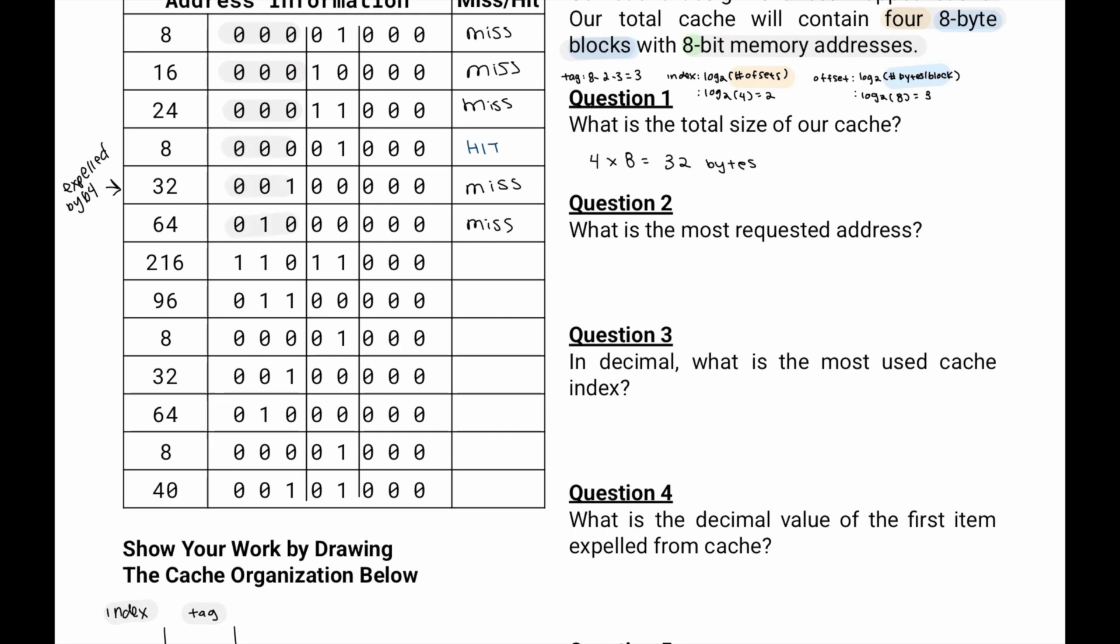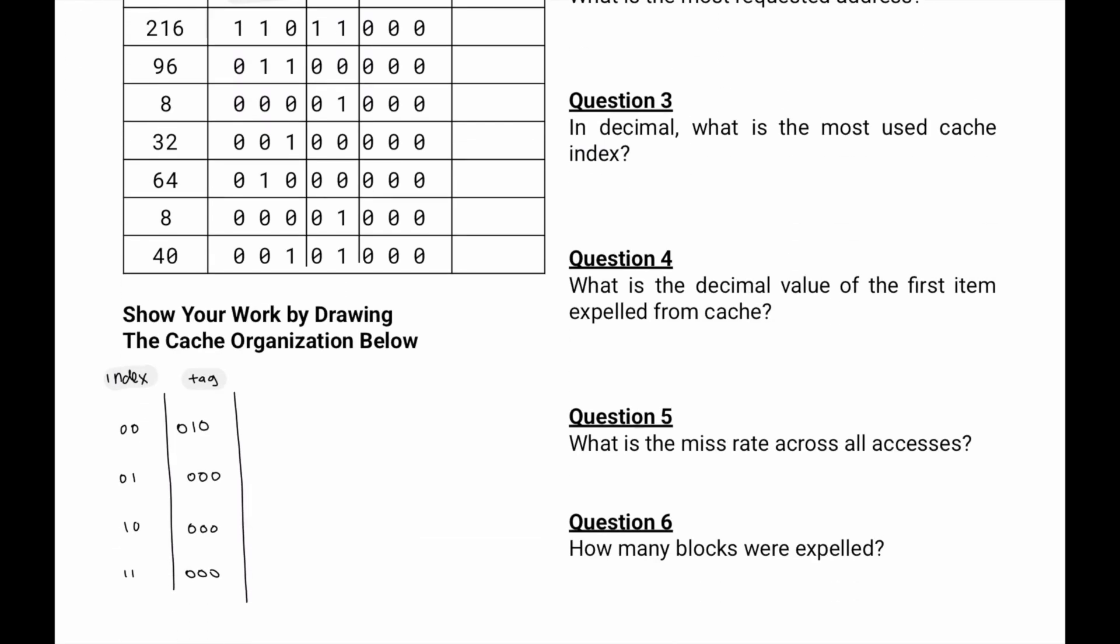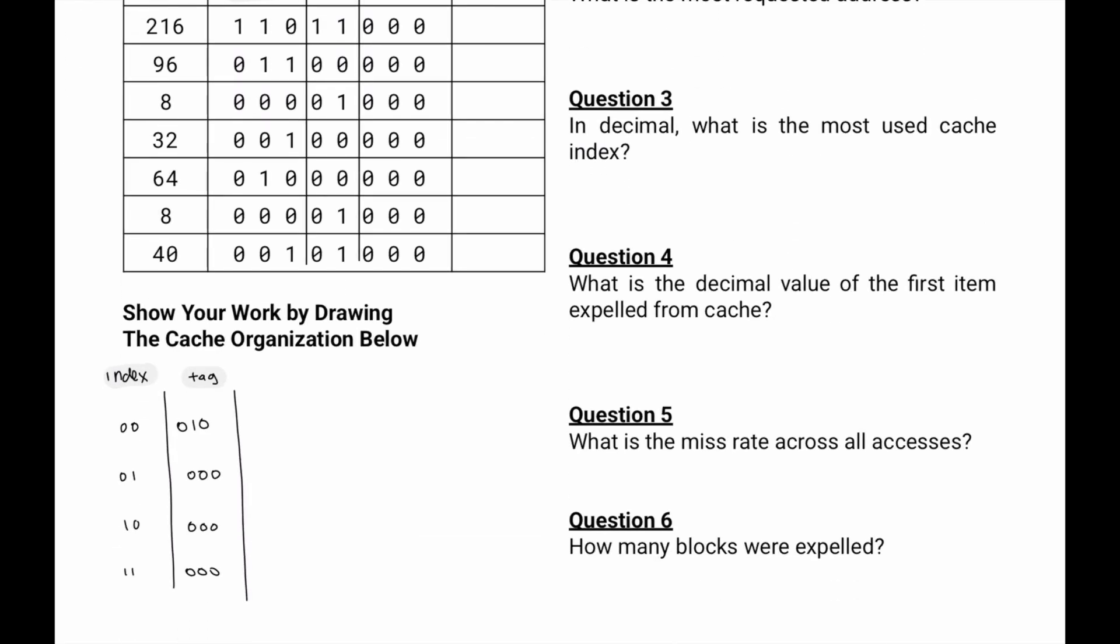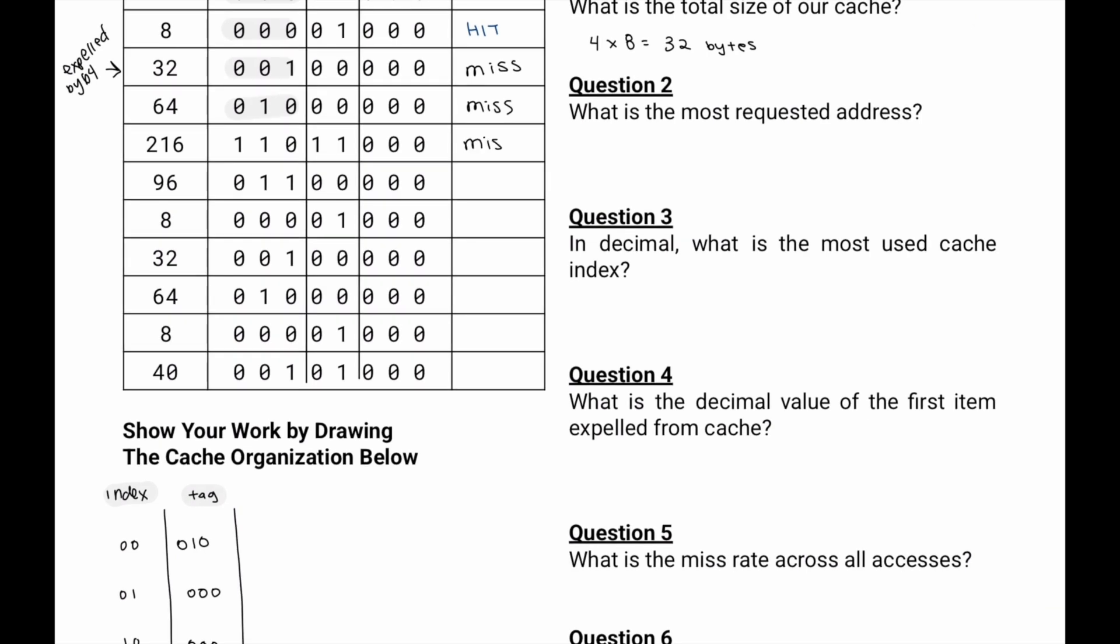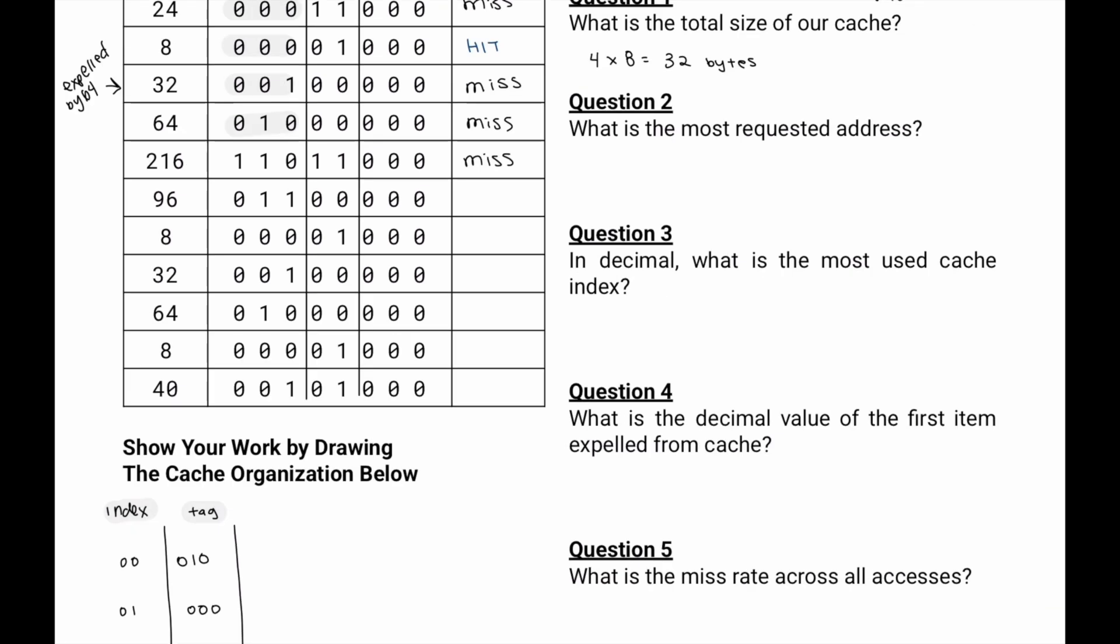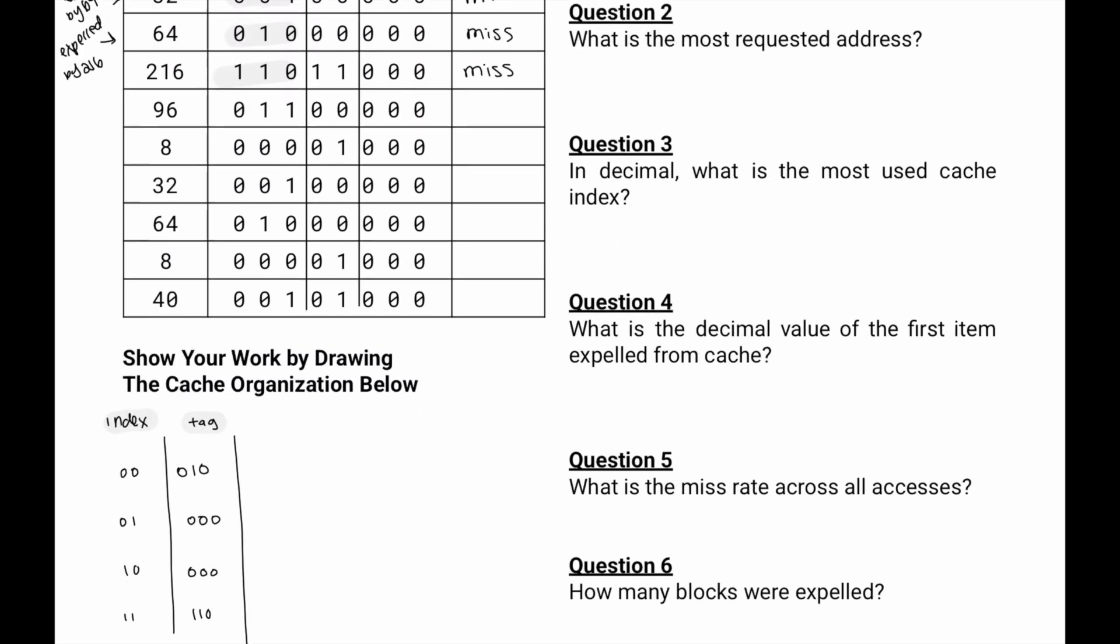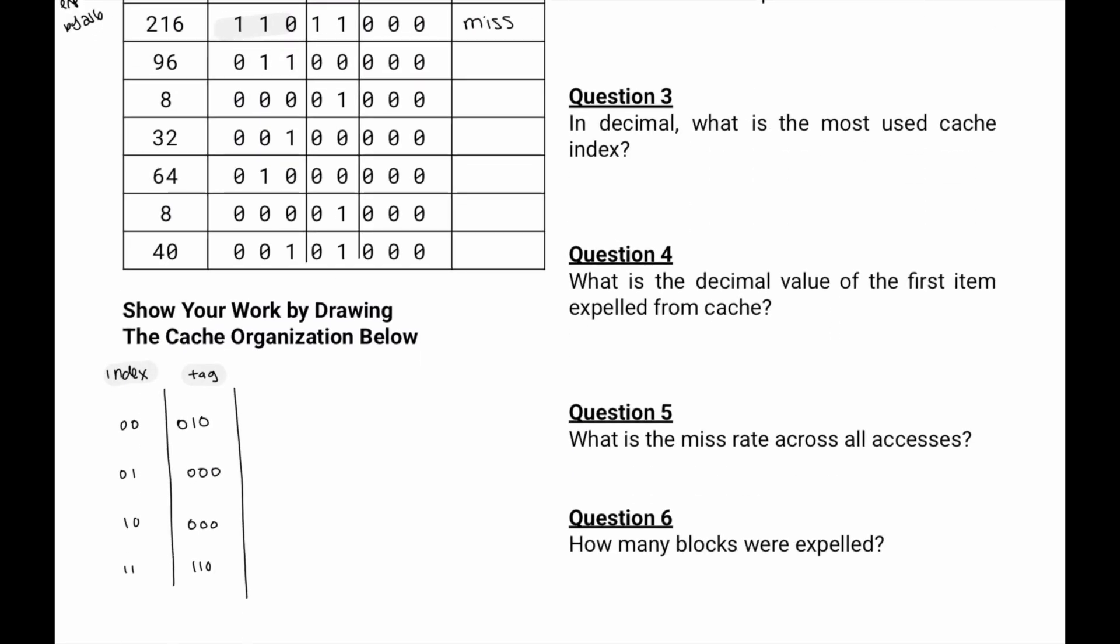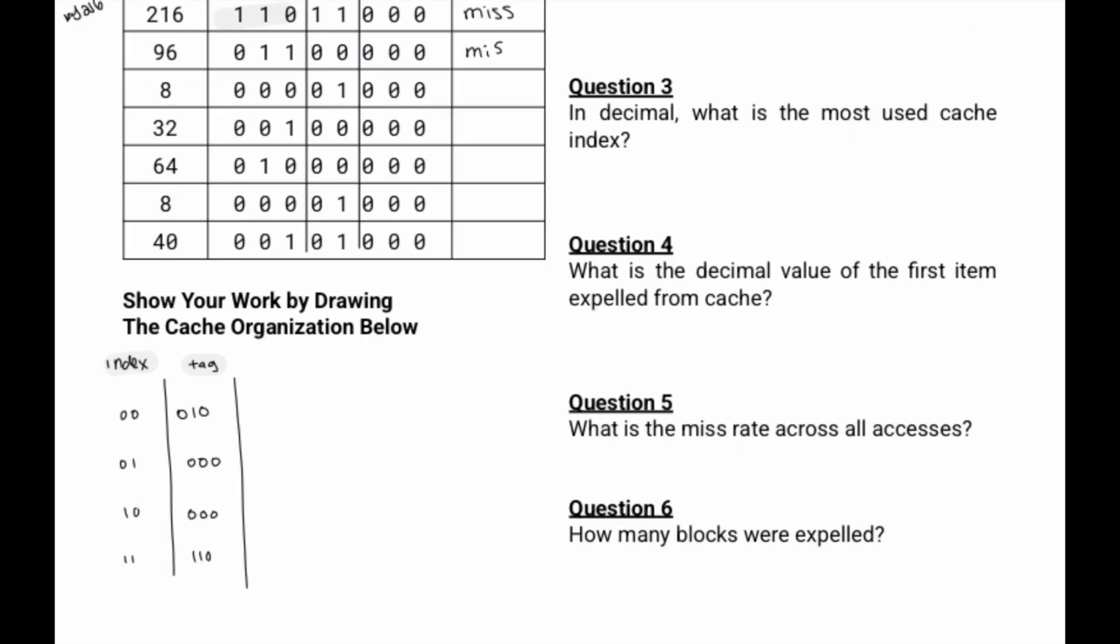Now we're at 216. We'll go to 11. Check for the tag 110 at 11. We don't have the tag 110. So we're going to write miss. And then we'll replace it with the tag 110. Then we'll go down to 96. Index 00. Does the tag match? No. That'll be a miss. We'll place in our new 011, and then we'll say 96 expels 64.